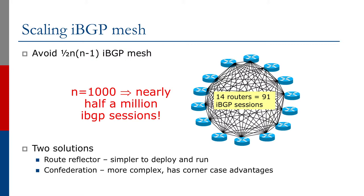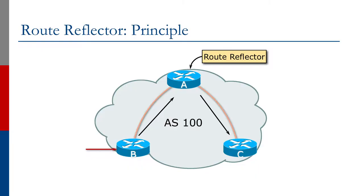The more routers we have, it goes up more or less n-squared — something that doesn't really scale very sensibly even with modern routers and big CPUs. To avoid the n-squared scaling problem, two solutions were generated. The first is the BGP confederation, which we're unlikely to cover during this series. The second is the route reflector, which we're going to look at in this section.